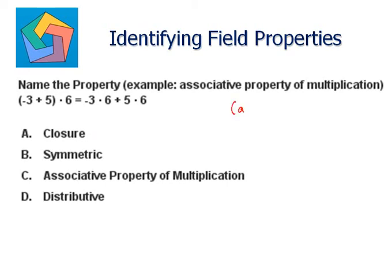Now this is similar to: A plus B times C is equal to A times C plus B times C, where A is negative 3, B is 5, and C is 6.